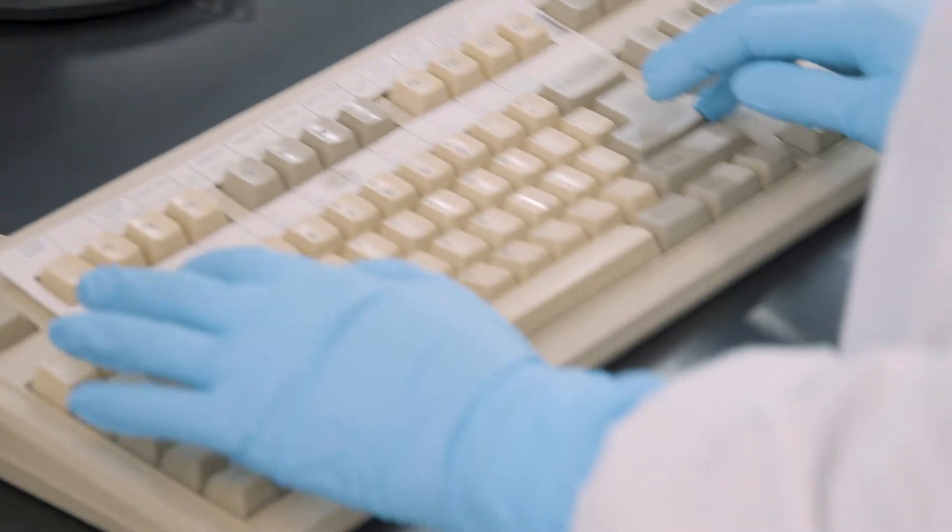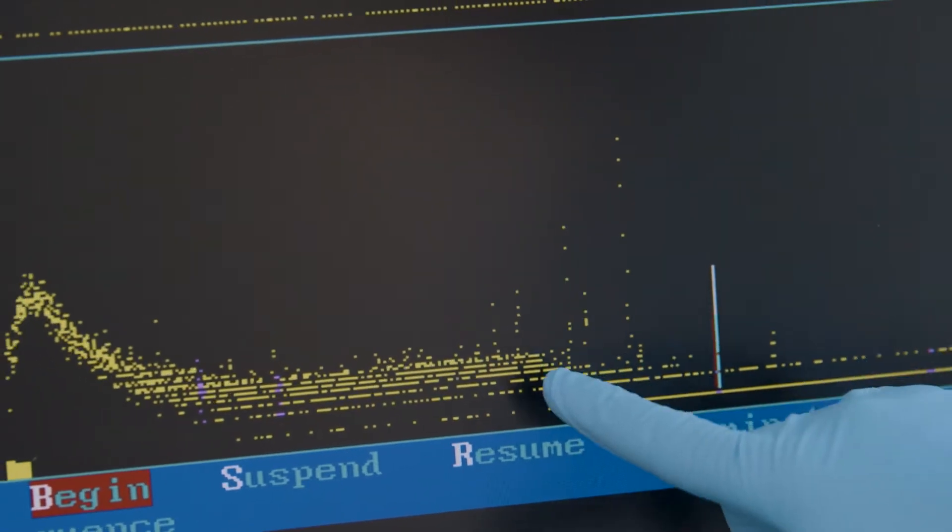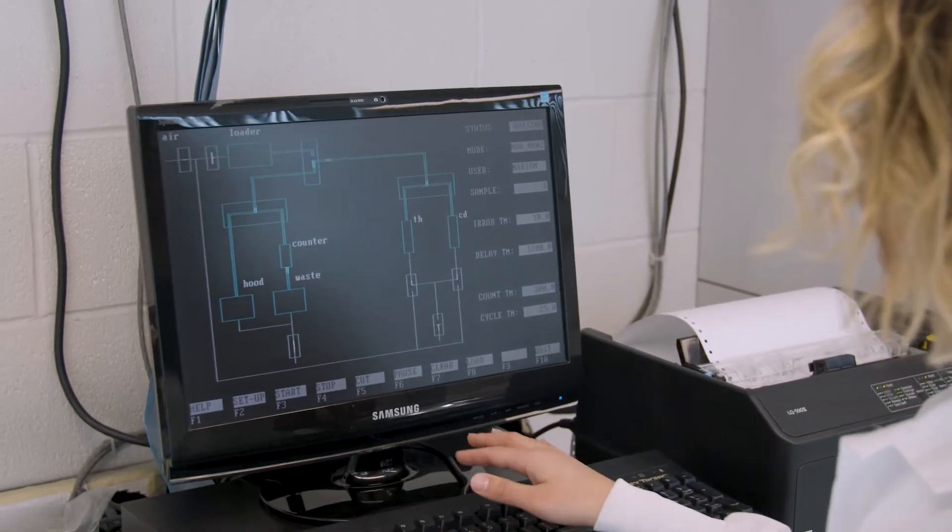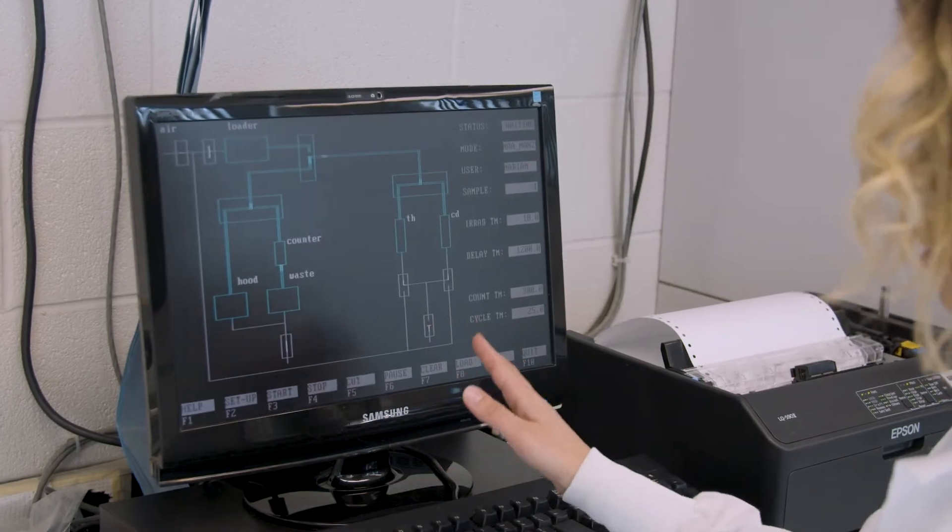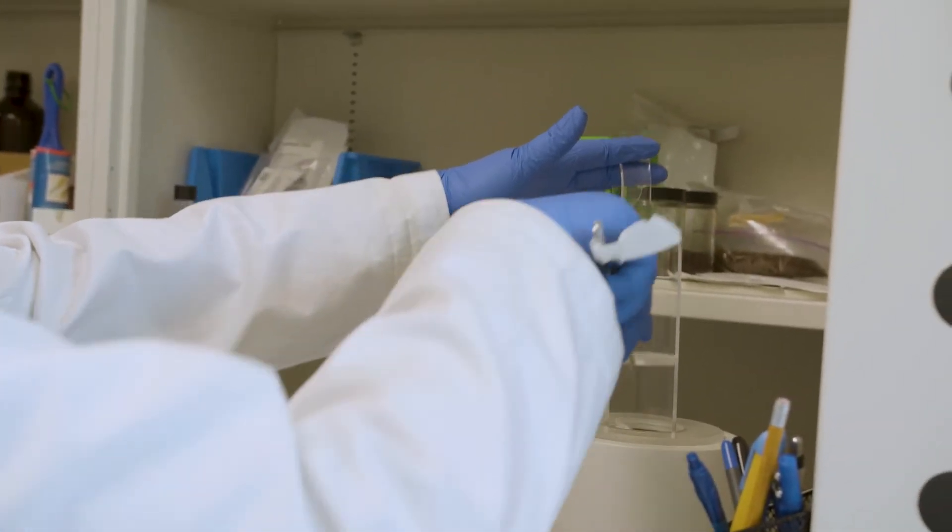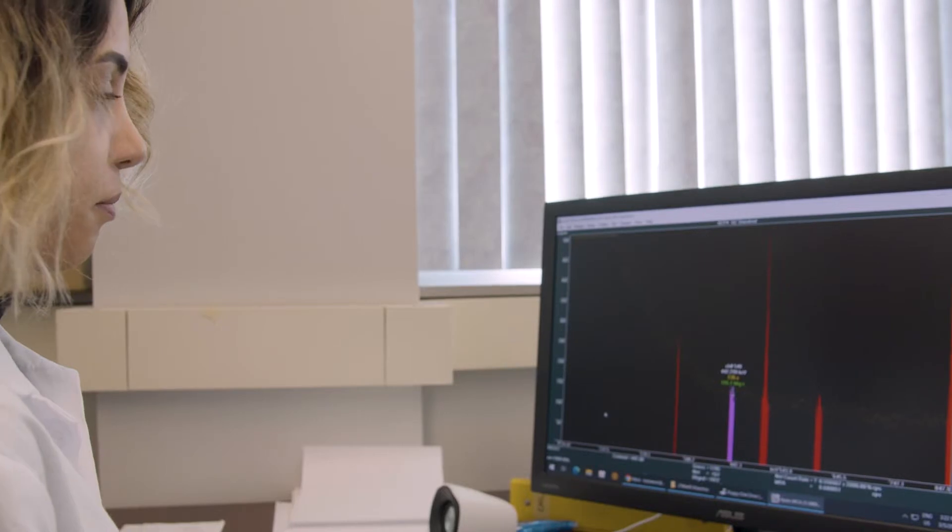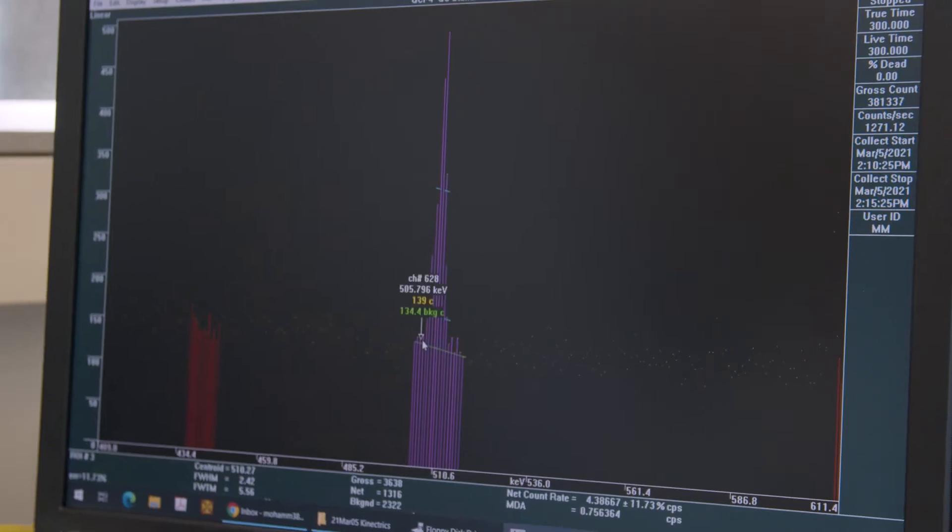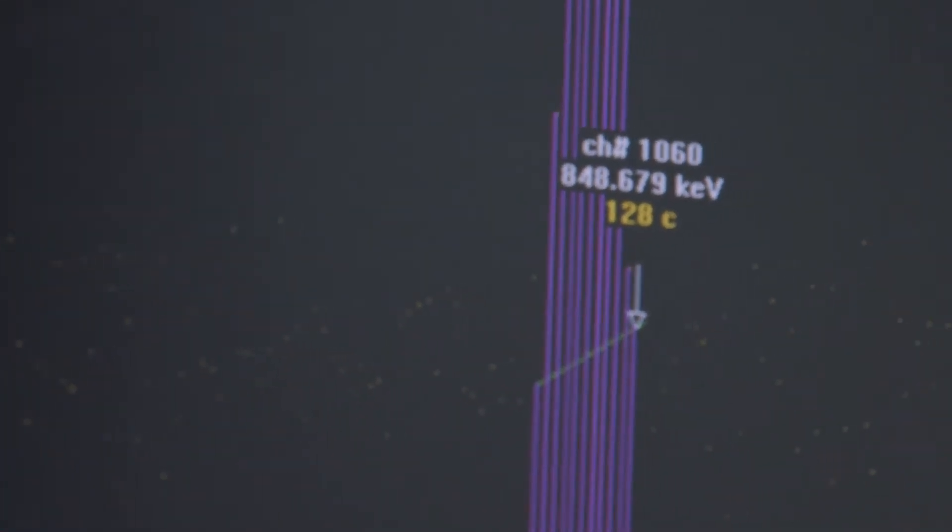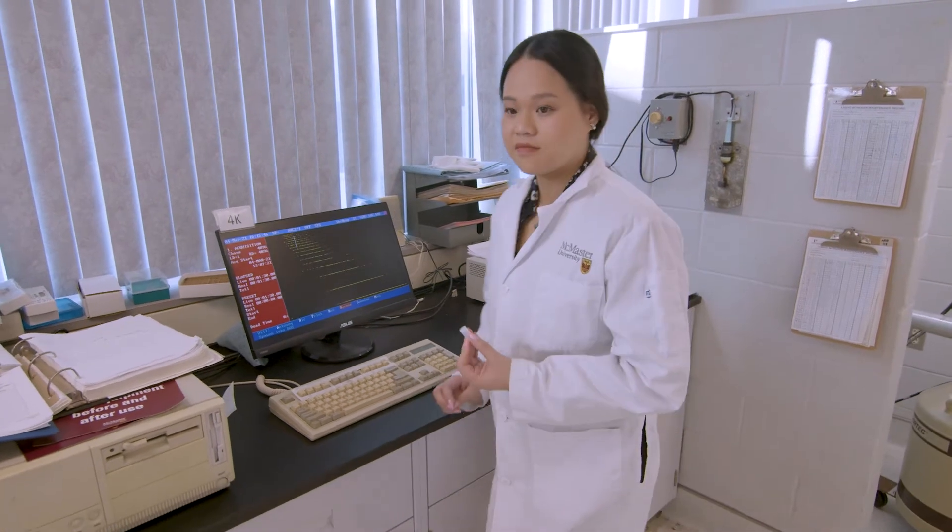Prompt gamma neutron activation analysis, or PGNAA, utilizes the prompt gamma rays emitted during neutron capture rather than the gamma rays that are emitted as a result of radioisotope decay. Used to determine elemental composition, it's useful for quantifying boron, cadmium, and certain lanthanoids. Our labs utilize high purity germanium detectors and their associated counting equipment.